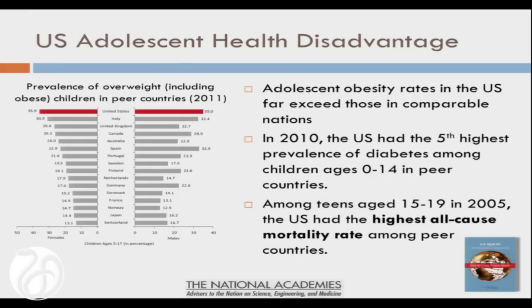Adolescence is an age group that got a lot of attention from us because we saw some very disturbing patterns among American teens compared to teens in other countries. Not surprising given all the other evidence: the highest rates of obesity and diabetes.